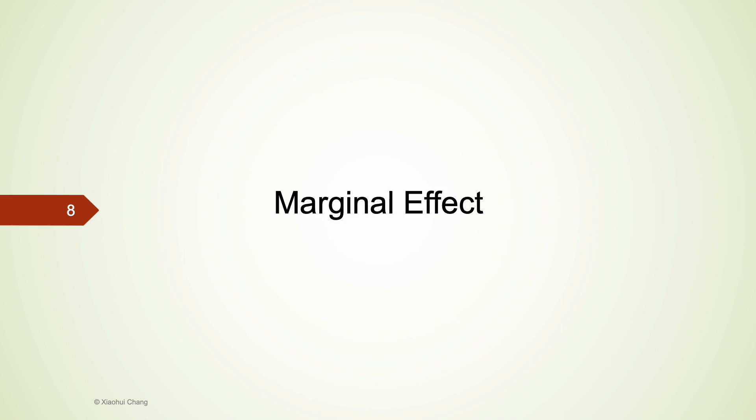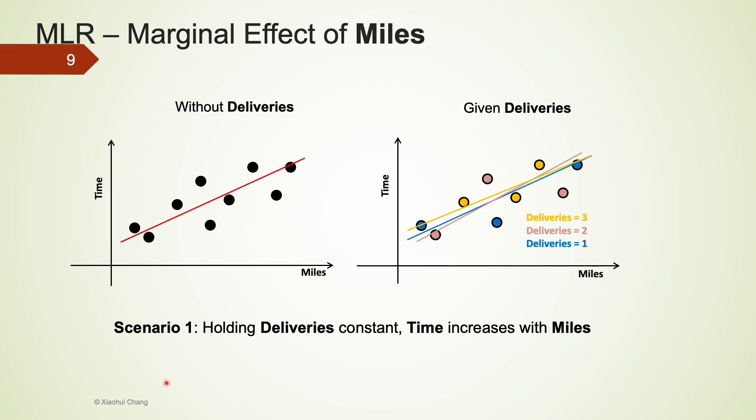So the first concept that differentiates multiple linear regression from simple linear regression is the marginal effect. The marginal effect is only meaningful when we have multiple independent variables. It measures the individual effect of each x on y while holding other x the same.